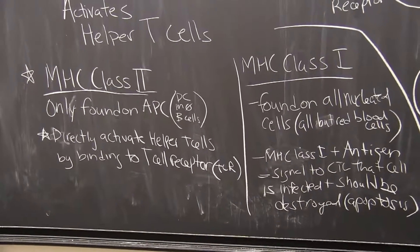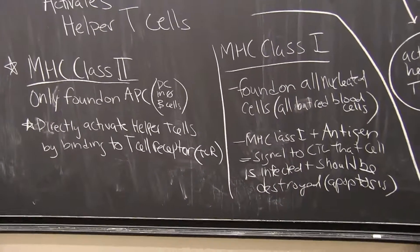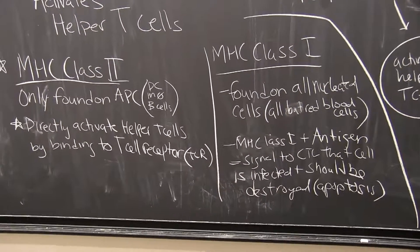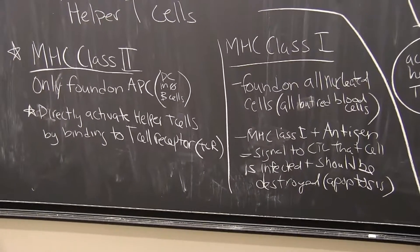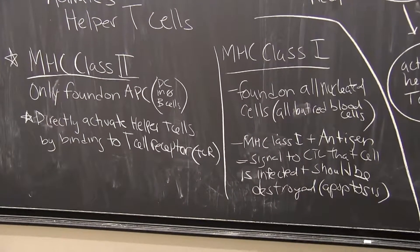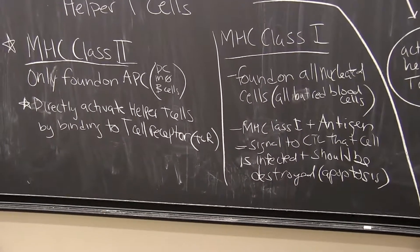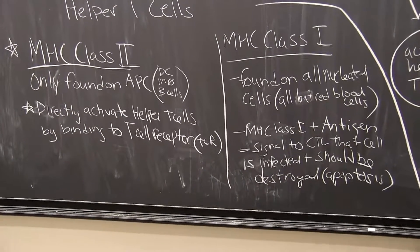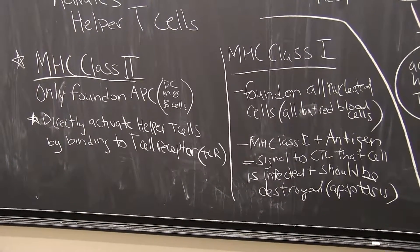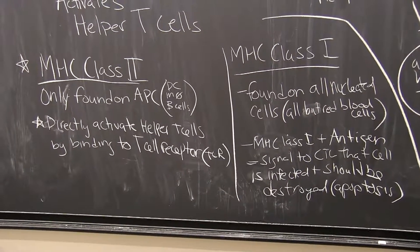A note about the two major classes of MHC. Remember, MHC molecules are there so that antigen can be loaded onto them and activate T cells. For MHC class 2, they are only found on antigen-presenting cells — those are the dendritic cells, the macrophages, and sometimes B cells.